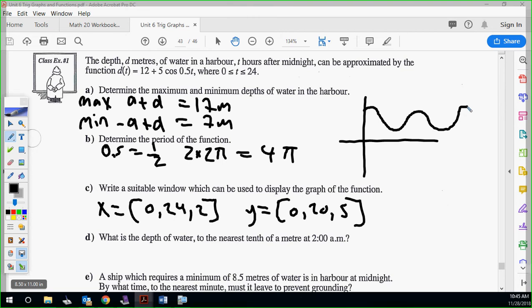It says what's the depth of water at 2 a.m.? Well, 2 a.m. is just 2 for time, because we start at midnight. So midnight, 1 a.m., 2 a.m., we just put a 2 in for t. When you calculate that, you're going to get 14.7 meters. So in regards to 2 a.m., is that closer to high tide or low tide? High tide, right? We're at 14.7, the max is 17, so it's relatively a high tide at that time.